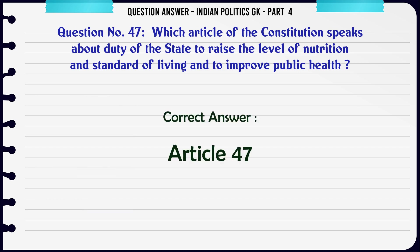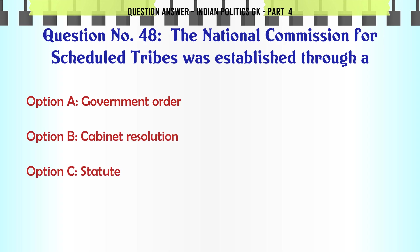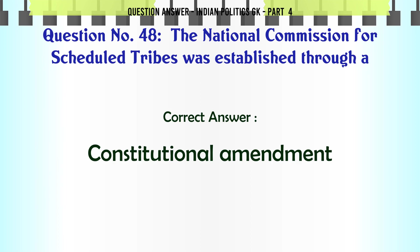The National Commission for Scheduled Tribes was established through a: A. Government Order. B. Cabinet Resolution. C. Statute. D. Constitutional Amendment. The correct answer is constitutional amendment.